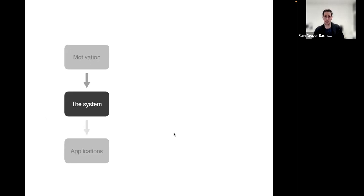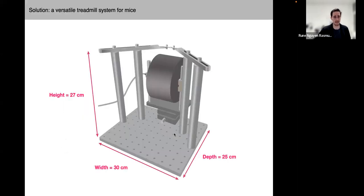So next I will introduce you to the system and how we went about building this. This is a scheme of what we essentially came up with. Just to give you an idea about the dimensions of the system, it's roughly 25 centimeters deep and 30 centimeters wide as well as 20 centimeters high. At least in our recording rigs, that makes it possible to fit into most in vivo electrophysiology as well as microscopy recording settings, so it makes it rather versatile experimentally to use.